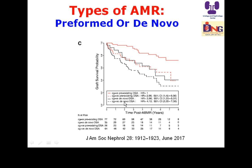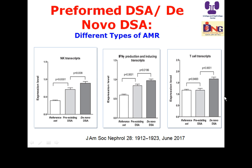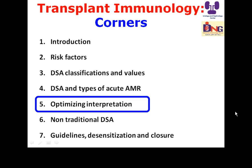Transcriptomic studies add further complexity to DSA assessment. The presence of DSA combined with natural killer cell transcripts, interferon-gamma production, and T-cell transcripts are all associated with DSA and may contribute to adverse outcomes.